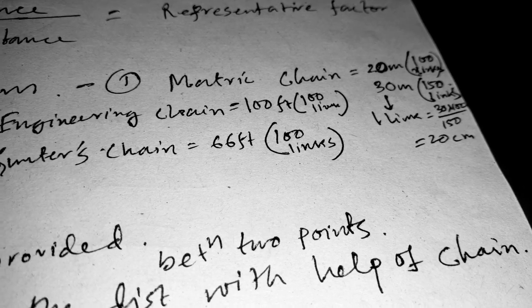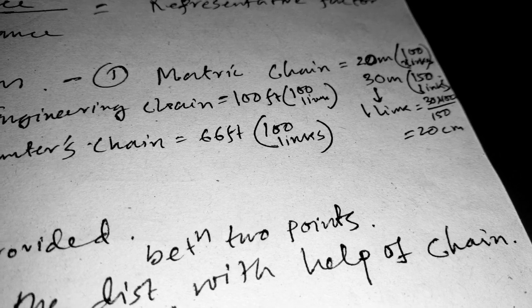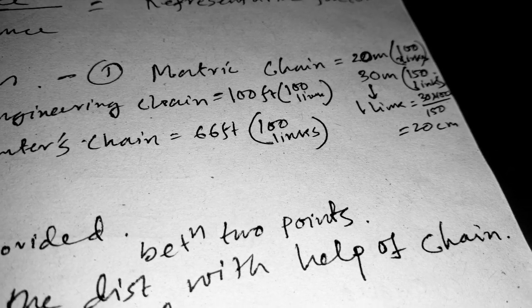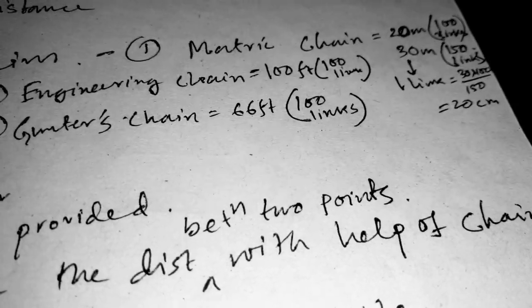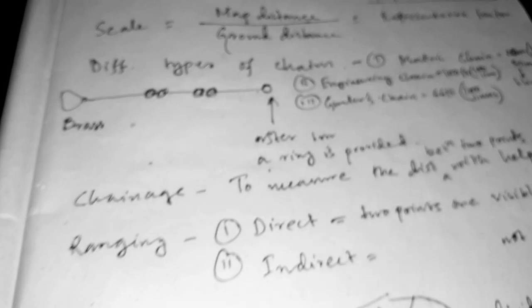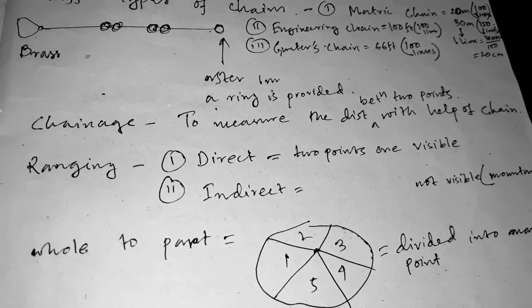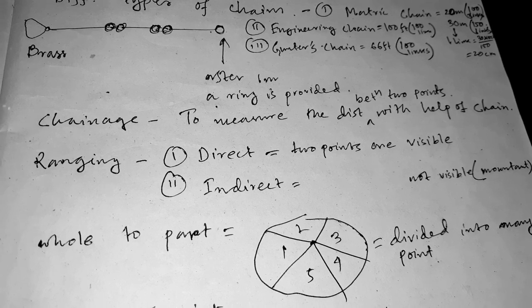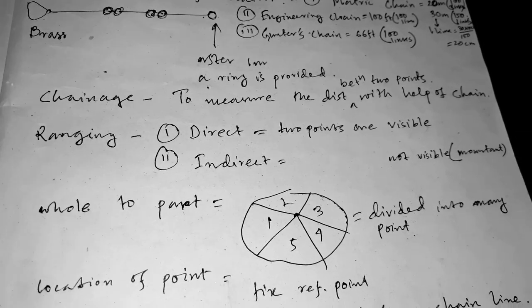We convert meter to centimeter to know the actual length of one link to another link. Now what is chain edge? Chain edge is to measure the distance between two points with help of chain. This is called chain edge.